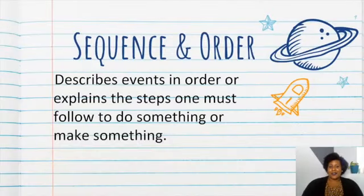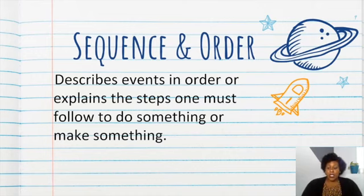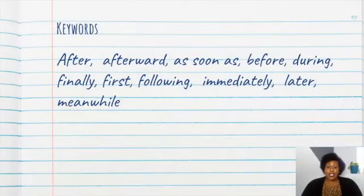Now, let's get into sequence and order. Again, a definition that you can write down to help you remember better what sequence and order looks like. This describes the events in order or explains the steps one must follow to do something or make something. Have you ever taken out a toy and you had to build parts of it? You need to go in order, you had to follow the directions. Or, if you've ever baked a cake, you know you have to go in order and follow the directions. So, this is what a text structure looks like. These are the keywords that you can follow to help you understand a sequence and order text structure.